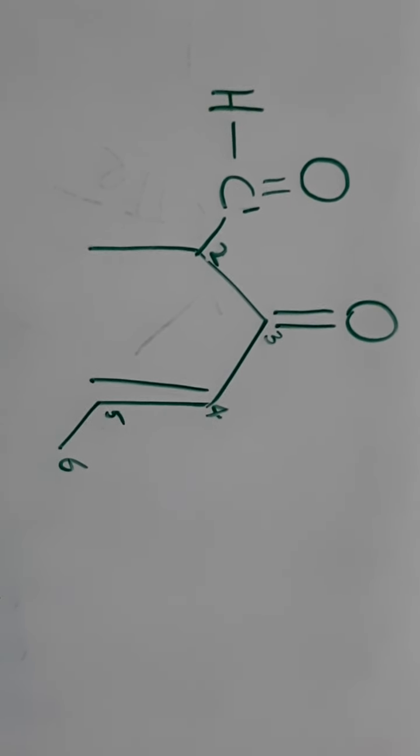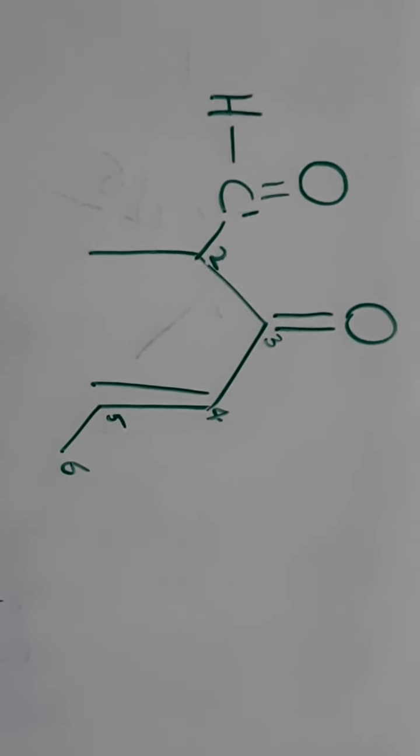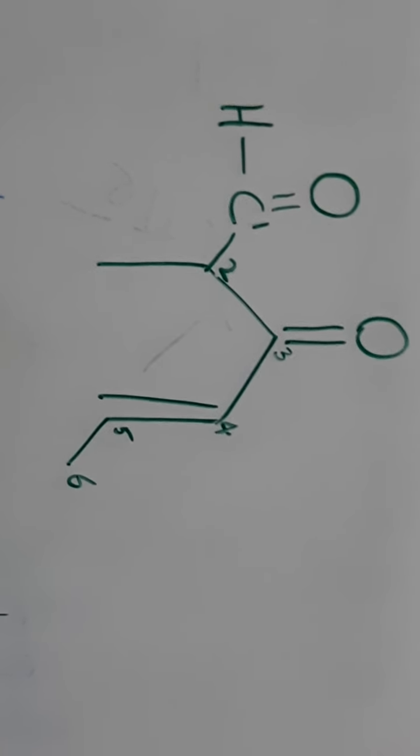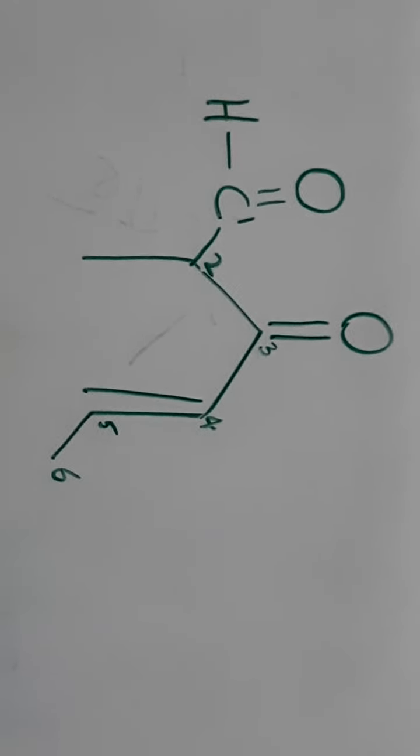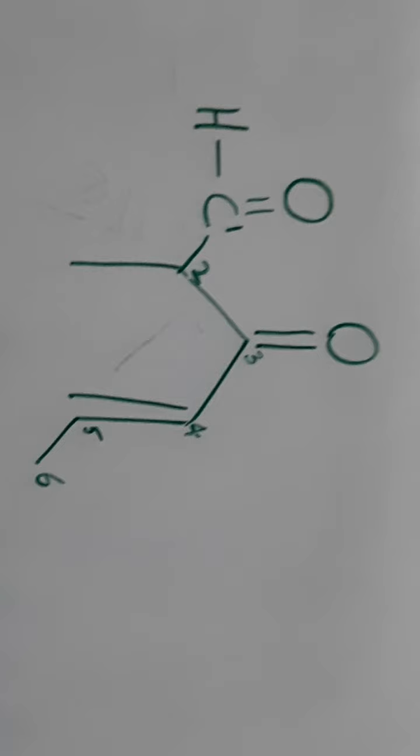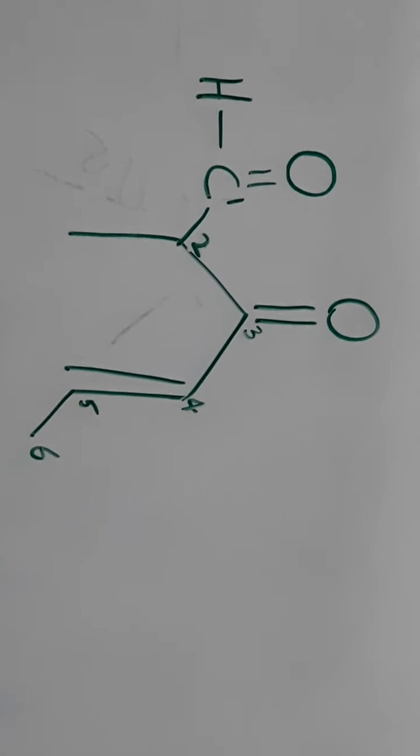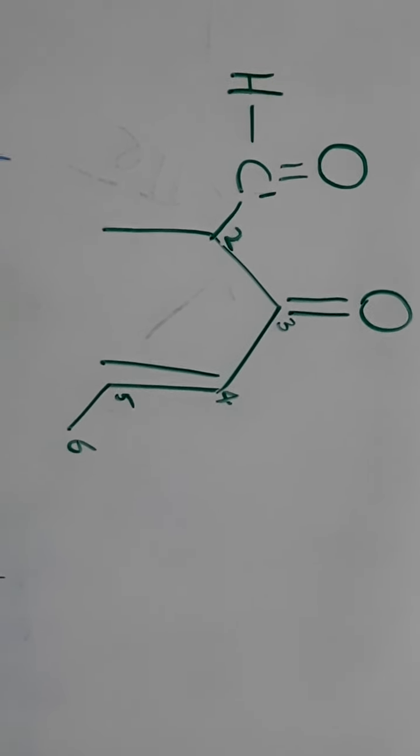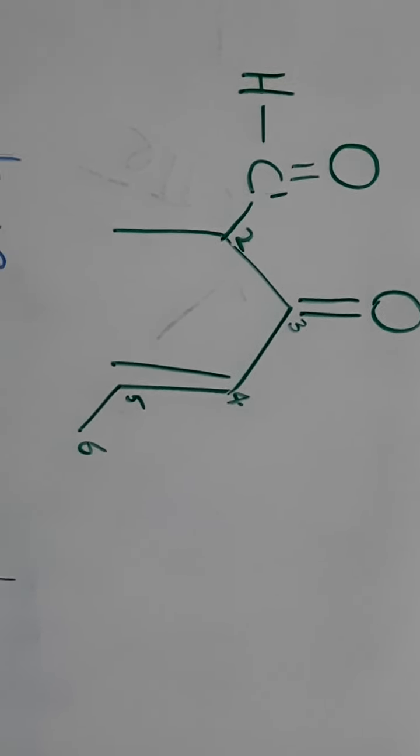So here we will confuse while giving numbering here. Let us observe carefully. Here if we consider substituents, aldehydes, ketones, and double bond is present. So now let us start numbering from aldehyde carbon atom.